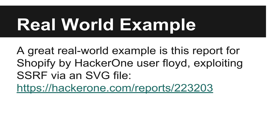A fantastic real-world example report is linked, in which an SSRF attack is executed on Shopify via the processing of an SVG file. This report is a great example of the indirection that can make these difficult to exploit. This particular bug is only one level of indirection away — an SVG upload causes a subsequent request to an image — but it's trivial to imagine situations with one or more additional indirections.